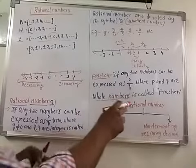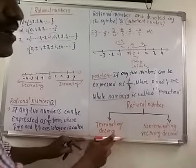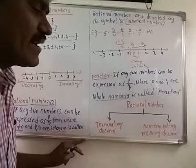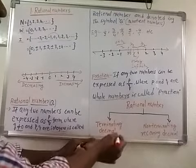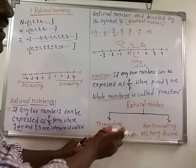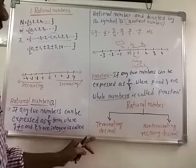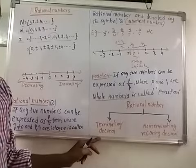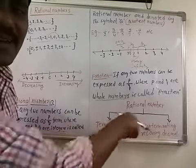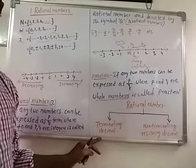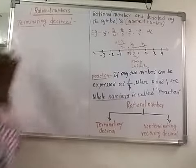Now, every rational number can be written either as a terminating decimal or as a non-terminating recurring decimal. Let us understand what each of these means.